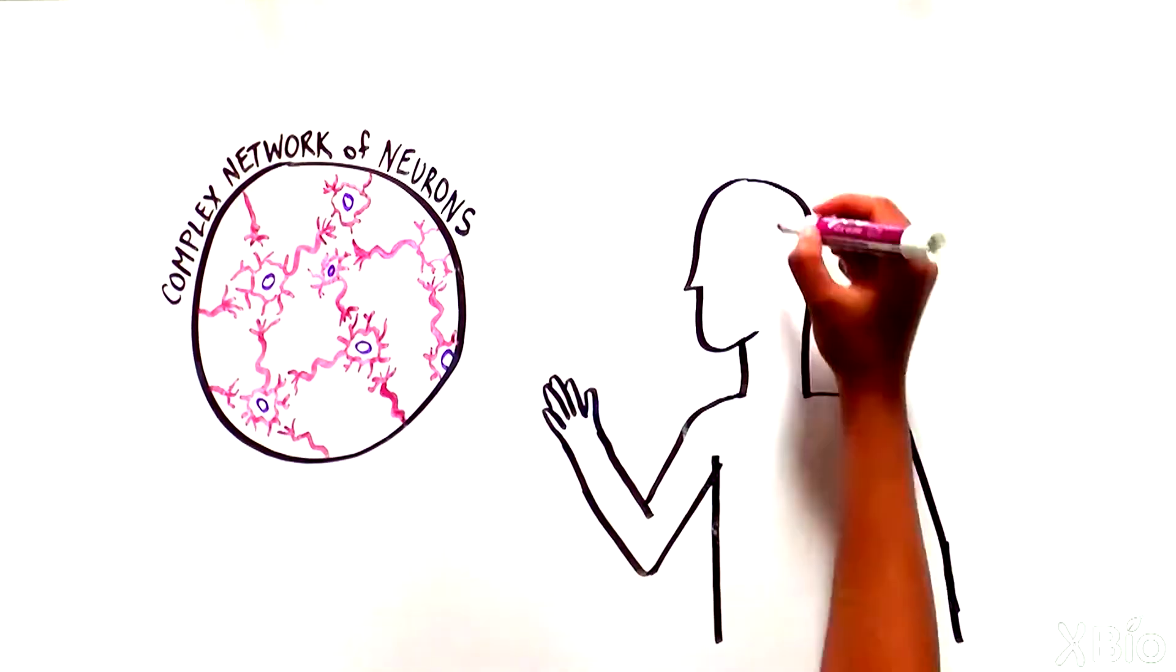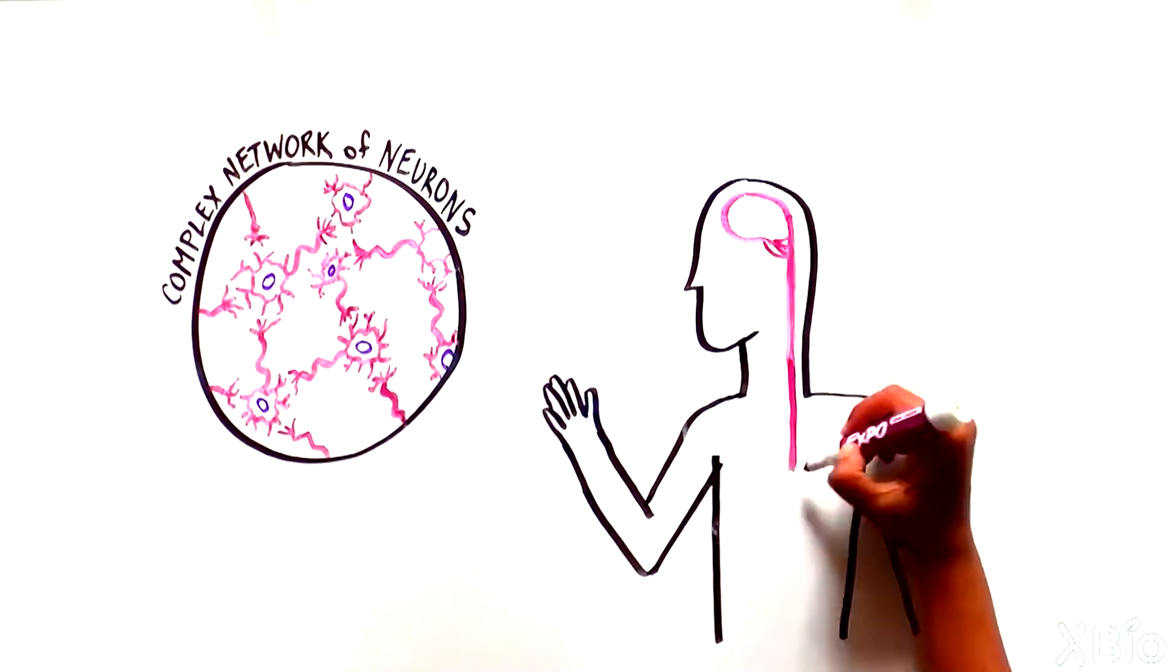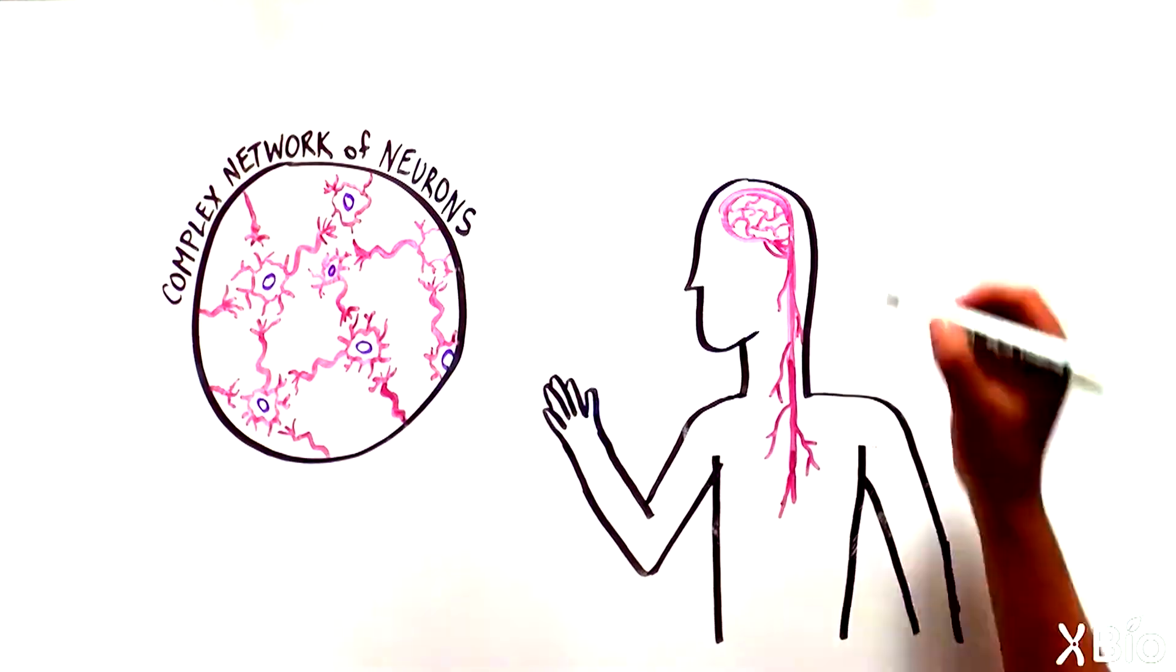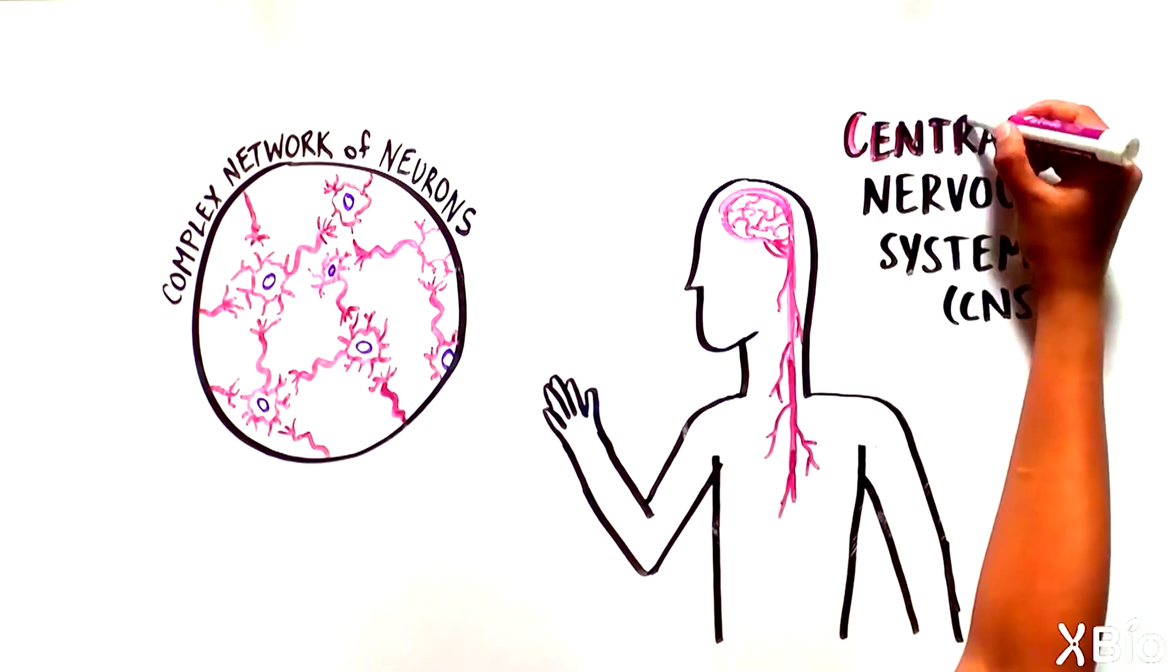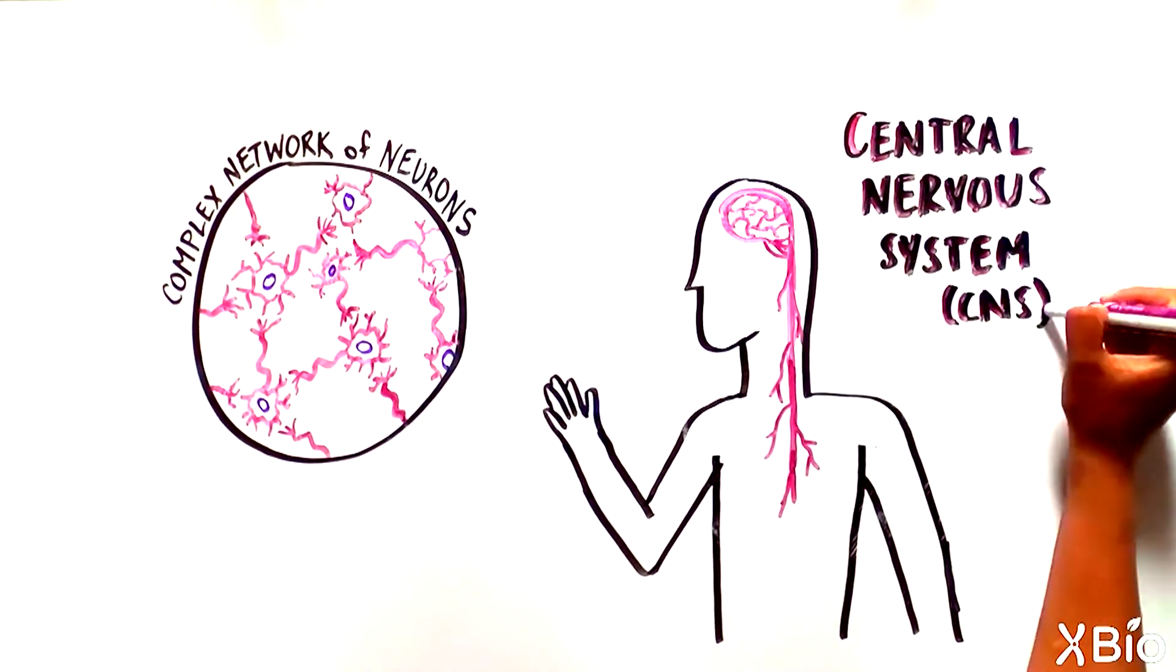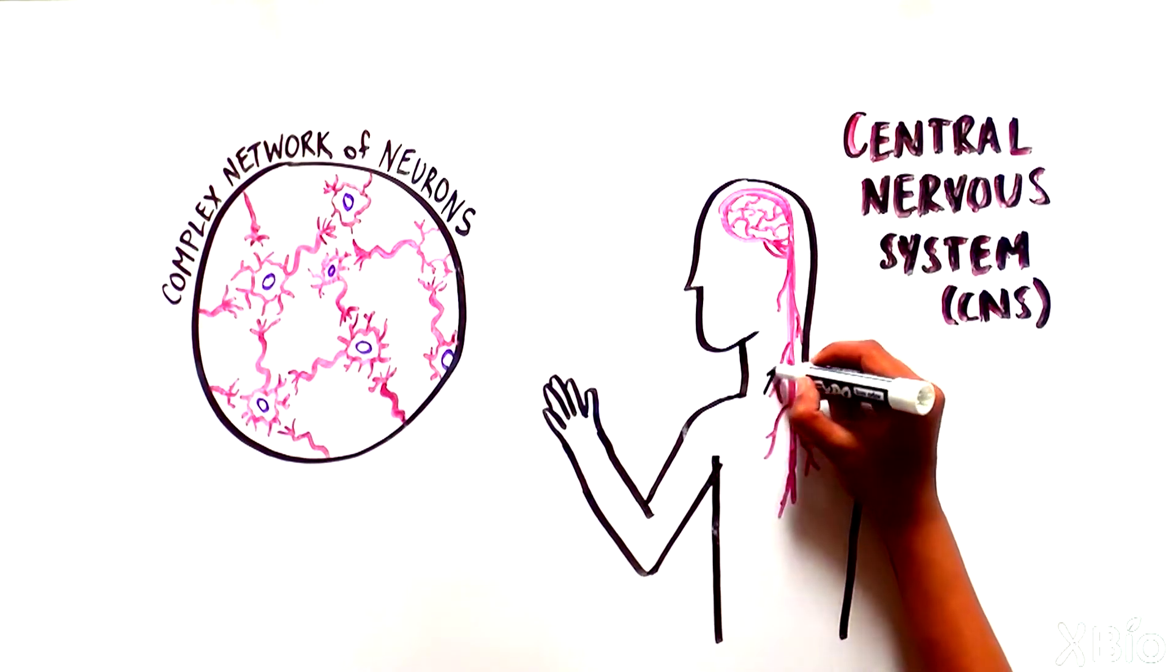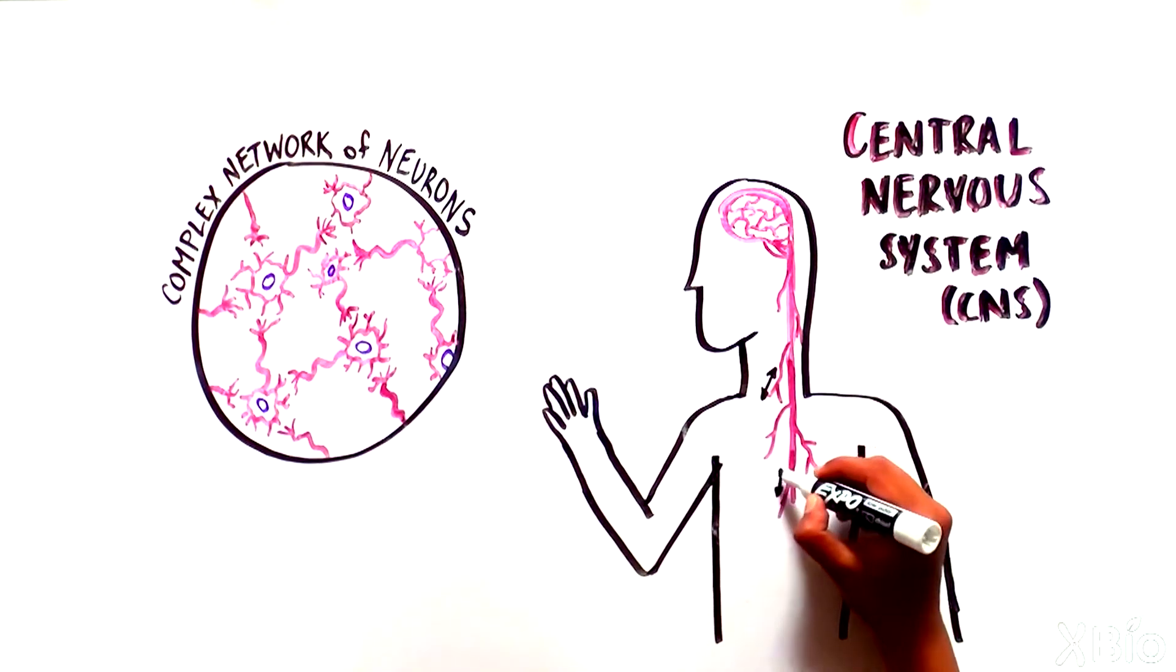The cells that make up the brain and spinal cord are collectively called the central nervous system or CNS. The CNS is responsible for both sending information from and processing information sent back to the brain.